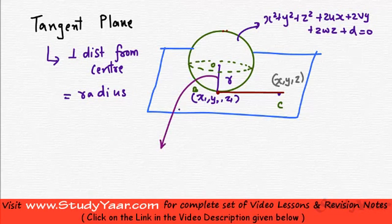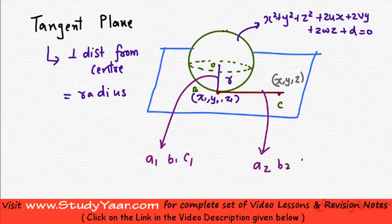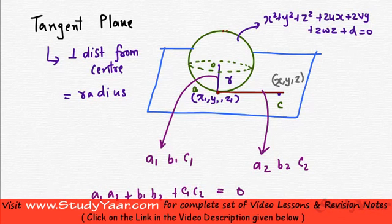Since OB is going to be perpendicular to BC, if OB's direction ratios are a1, b1, c1 and BC's direction ratios are a2, b2, c2, then I am going to have a1*a2 plus b1*b2 plus c1*c2 equal to 0.